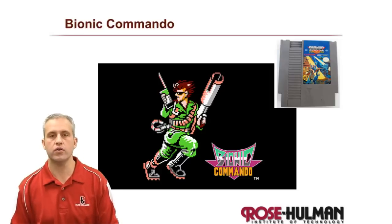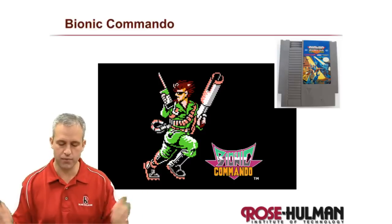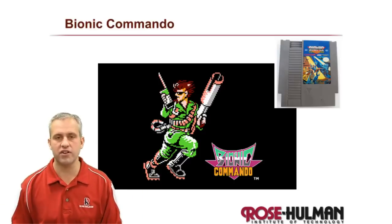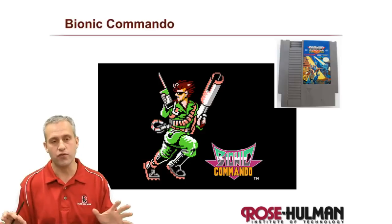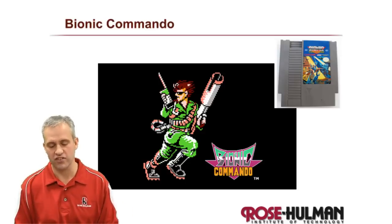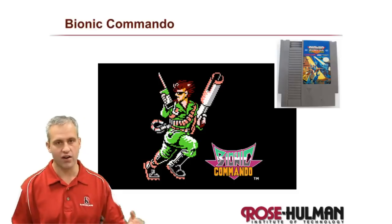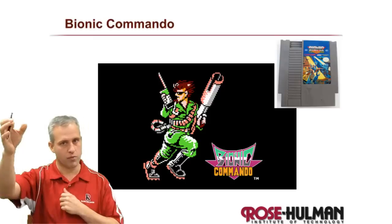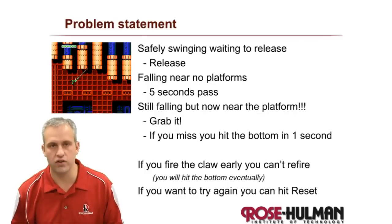Welcome back. We want to get some practice implementing finite state machines, so I picked a silly example because silly examples are fun. We're going to make a finite state machine for the video game Bionic Commando. There are many new versions of Bionic Commando, but officially this is the old-school Nintendo version — a guy, an army guy with a grappling hook that may be his arm or maybe a separate grappling hook, depending on who you ask.